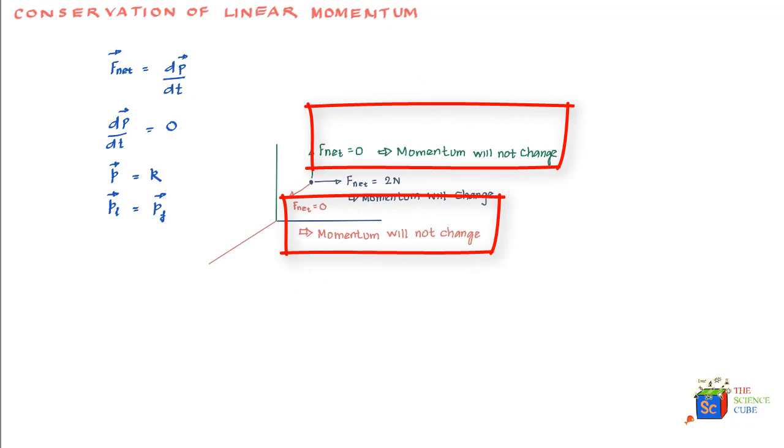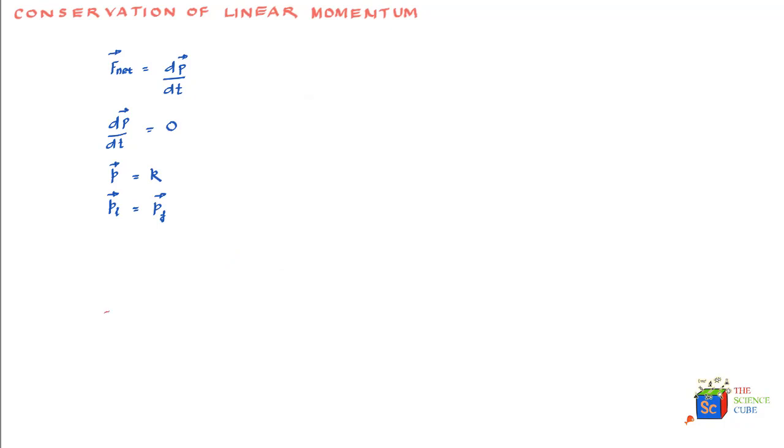To explain this further, take a very good example where you project a ball as a projectile. What you know from earlier lessons is that it will take a trajectory which would be parabolic.